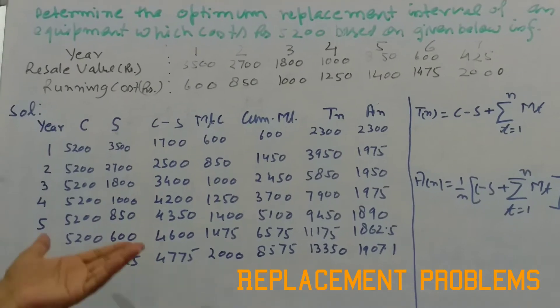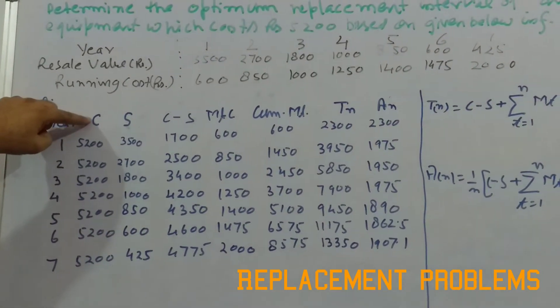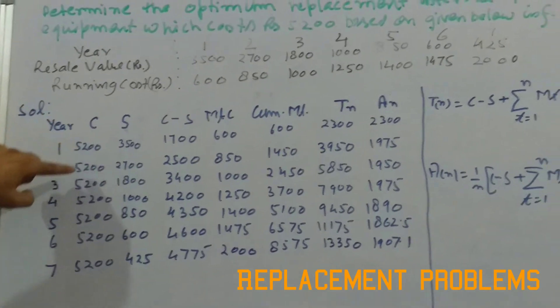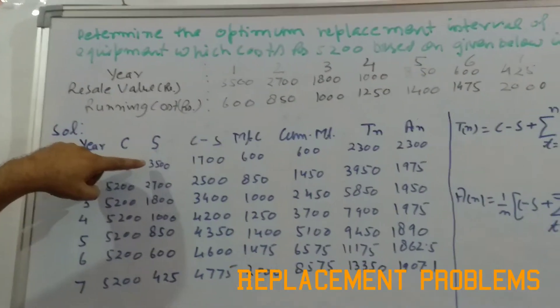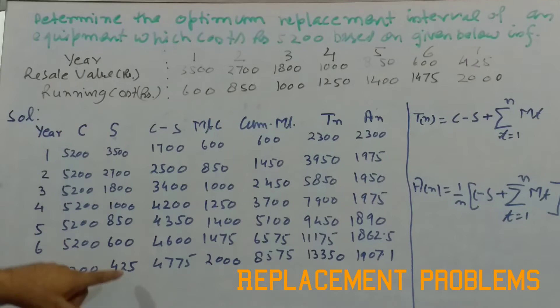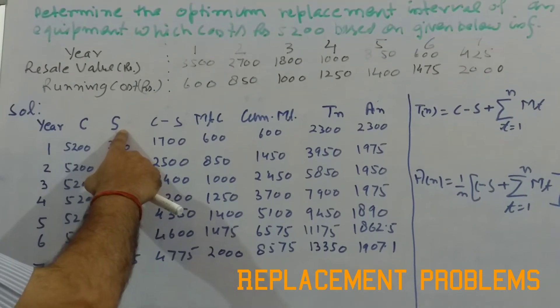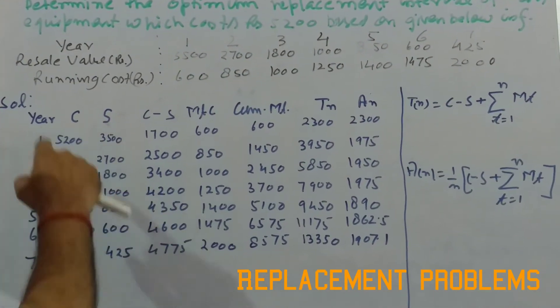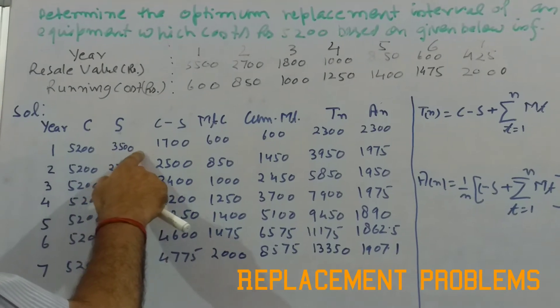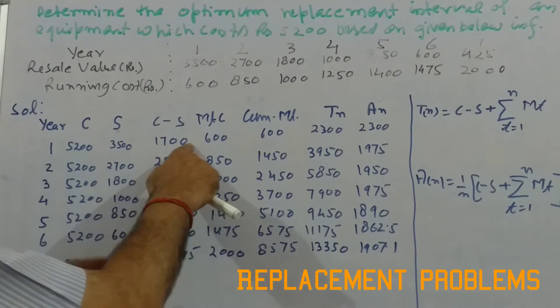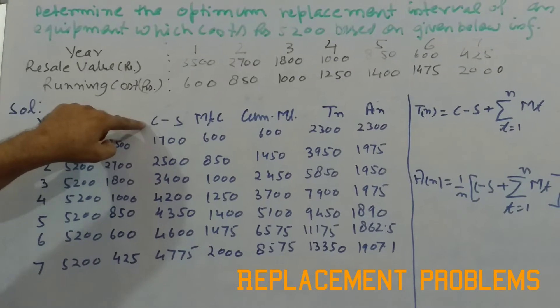So what we need to do, first we just in a tabular form need to observe the data for each year. The purchase cost C will just remain the same, 5200 for all the 7 years. So we have to subtract S, that is given here, from C. So the moment we subtract it here, like 5200 minus 3500, it comes out to be 1700. In the same fashion, I am not going into detail of calculation; I hope that everybody understands it. So here C minus S has been calculated.